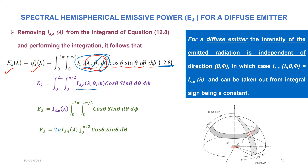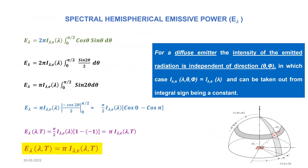Writing equation 12.8 again, we take I_lambda_e as a function of lambda outside the integration sign. The remaining integral has phi varying from 0 to 2π and theta varying from 0 to π/2, with the integrand cos(theta) sin(theta) d(theta) d(phi). Integrating with respect to phi gives 2π. The remaining integral becomes 2π·I_lambda_e times the integral from 0 to π/2 of cos(theta) sin(theta) d(theta), which can be rewritten as sin(2θ)/2 · d(theta), and the two factors of 2 cancel.